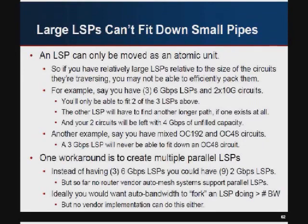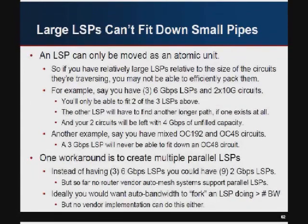Another workaround is creating multiple parallel LSPs — for example, instead of three 6-gig LSPs, split them into nine 2-gig LSPs, which are much easier to pack efficiently. Ideally, the auto bandwidth process would be able to look at an LSP and fork it if it goes above a certain amount. This is especially important if you run mixed link sizes across your network.